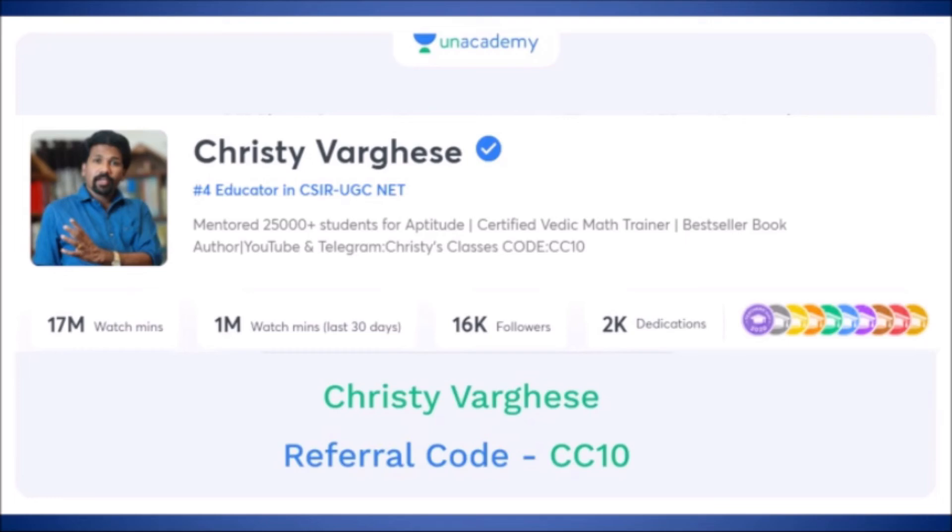And if you want live free classes for General Aptitude, you can download Unacademy mobile application and search this profile, Christy Willis, and you can see 300 plus pre-recorded videos and upcoming daily live classes happen at 11 a.m., Monday to Friday. Free classes happen in this profile.